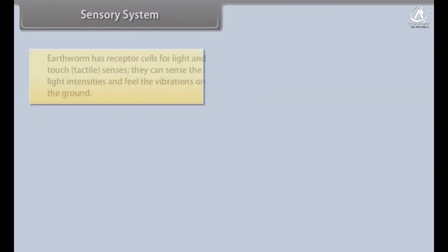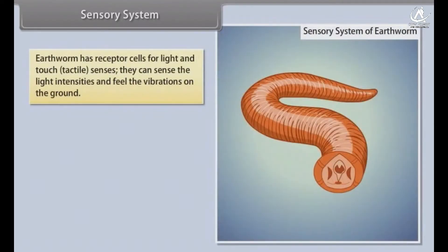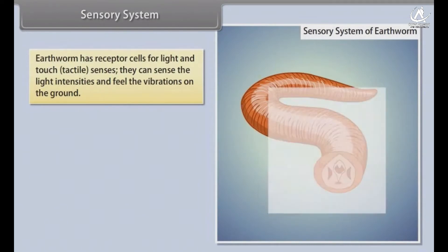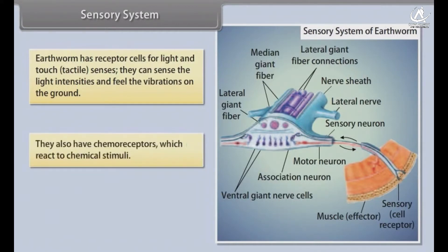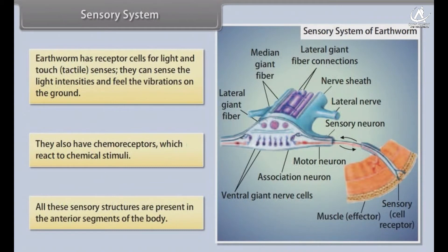Sensory system. Earthworm has receptor cells for light and touch, that is tactile senses. They can sense the light intensities and feel the vibrations on the ground. They also have chemoreceptors which react to chemical stimuli. All these sensory structures are present in the anterior segments of the body.